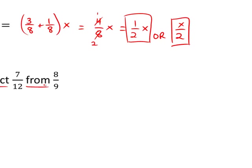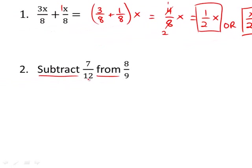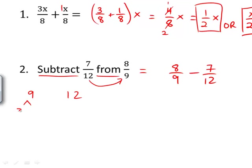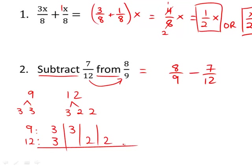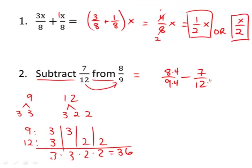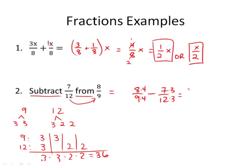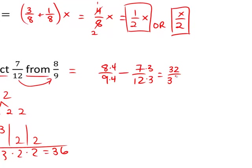This last one has some wording. Remember, when you have 'subtracted from,' you have to switch the order — because you're subtracting this from that, you're going 8 ninths minus 7 twelfths. Be careful with that phrasing. We need a common denominator for 9 and 12. 9 is 3 times 3; 12 is 3 times 2 times 2. That gives us 3 times 3 times 2 times 2 for a common denominator, which is 9 times 4 = 36. So 9 times 4 and 12 times 3: giving us 32 over 36 minus 21 over 36. 32 minus 21 is 11 over 36.